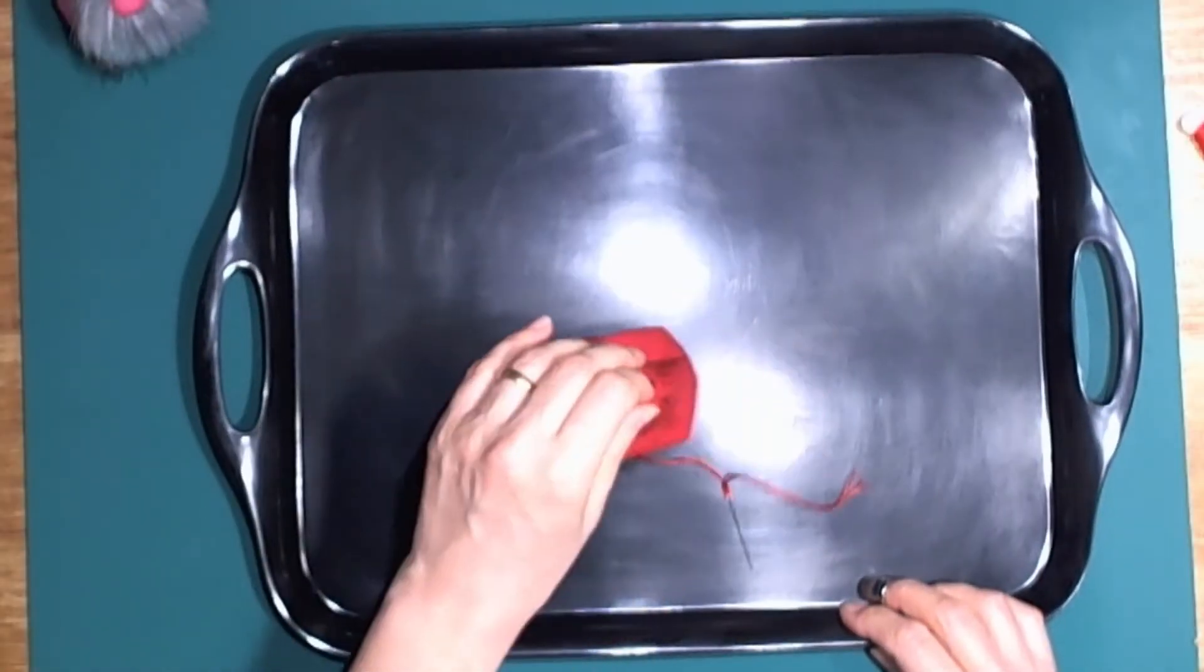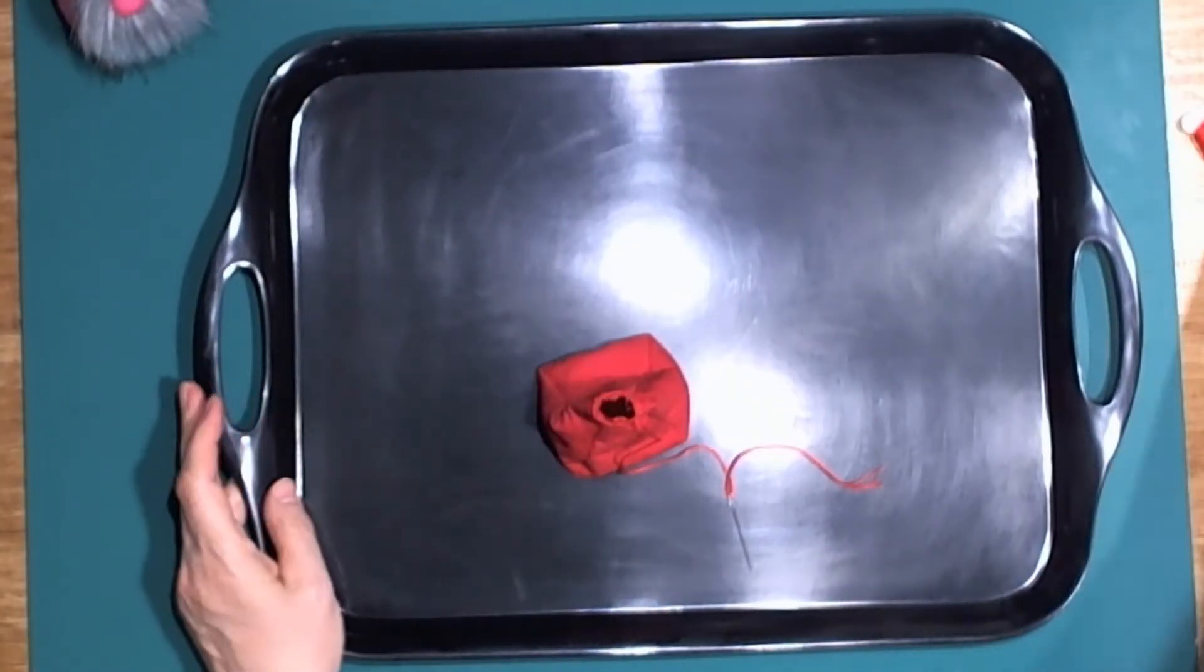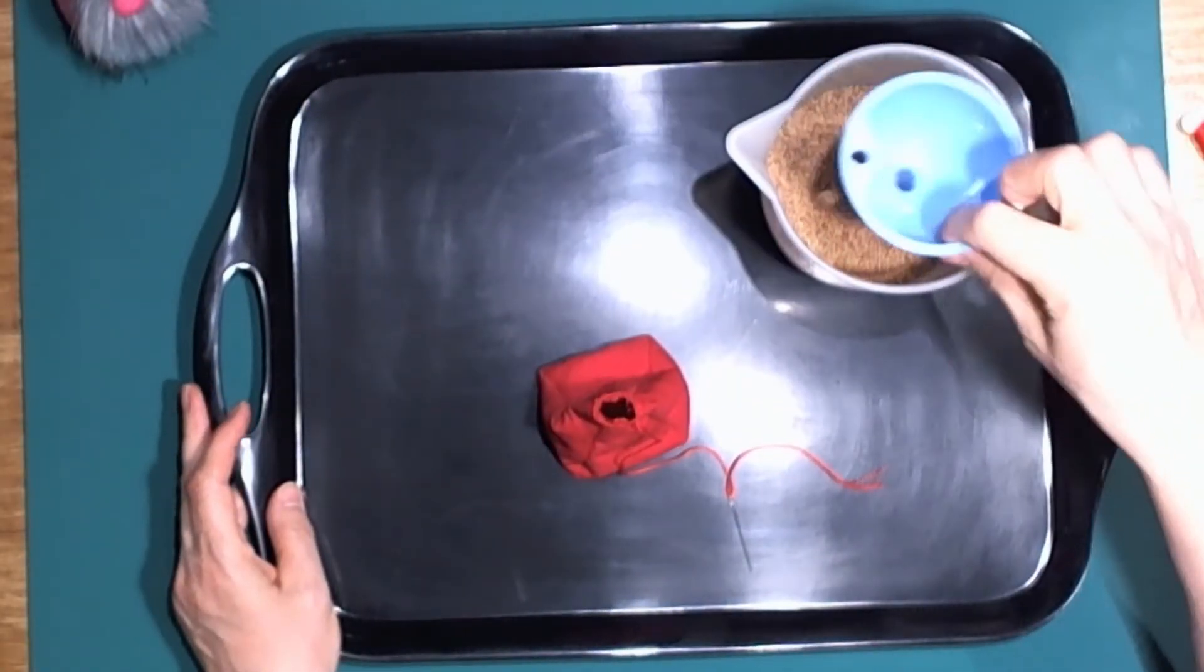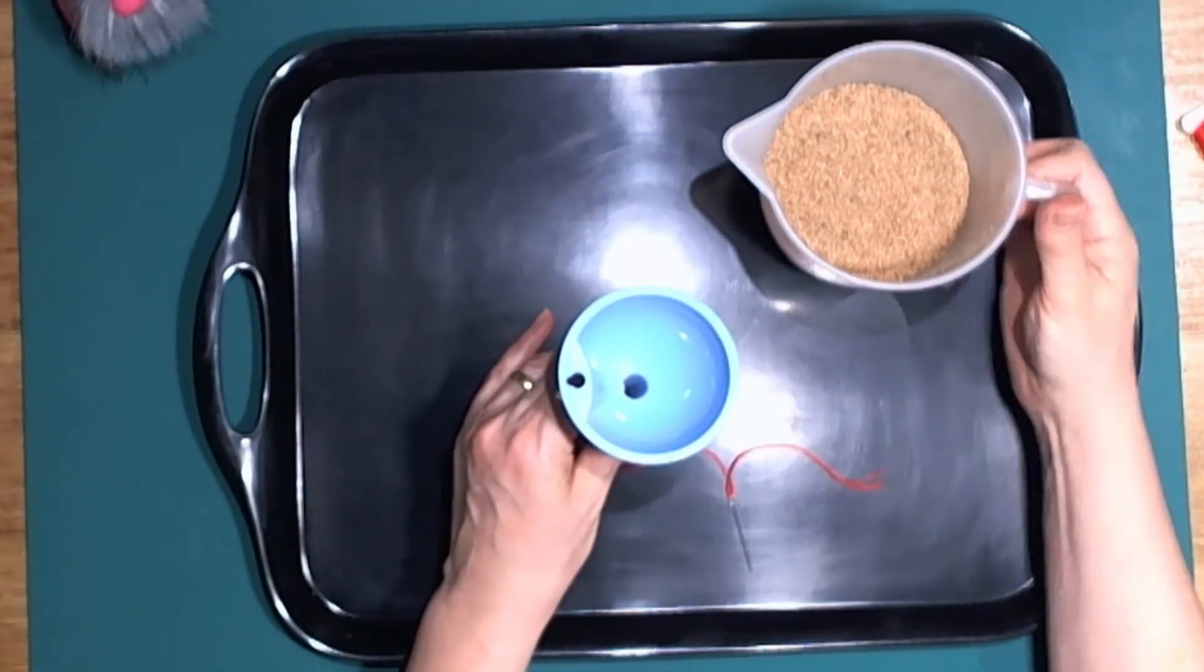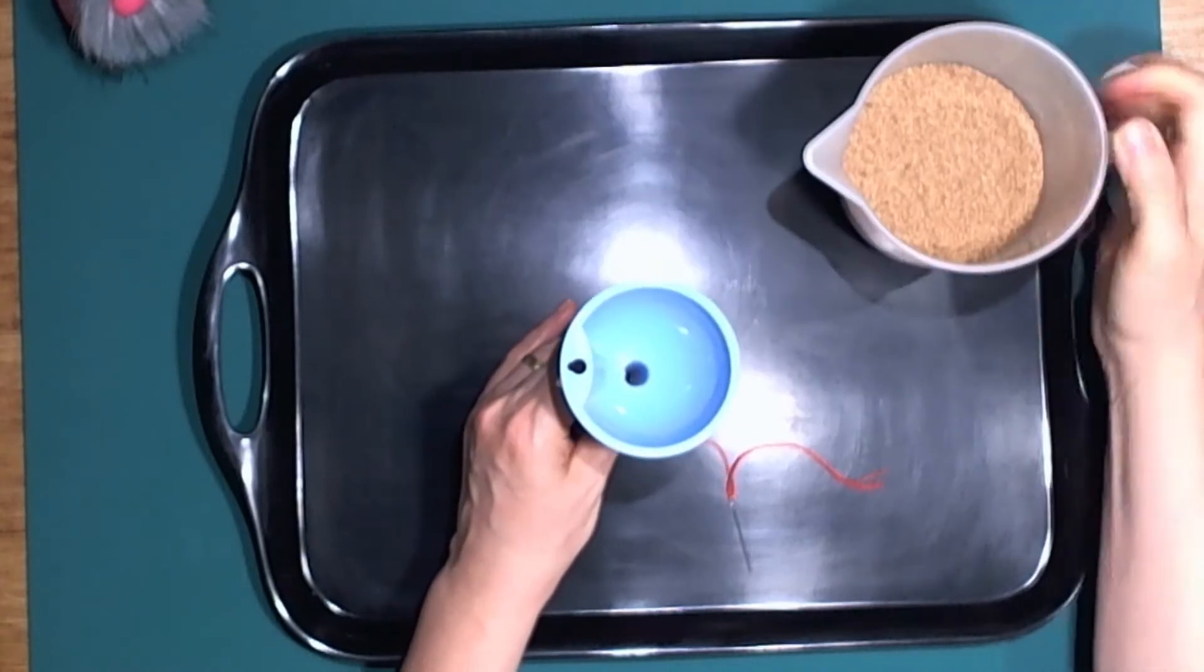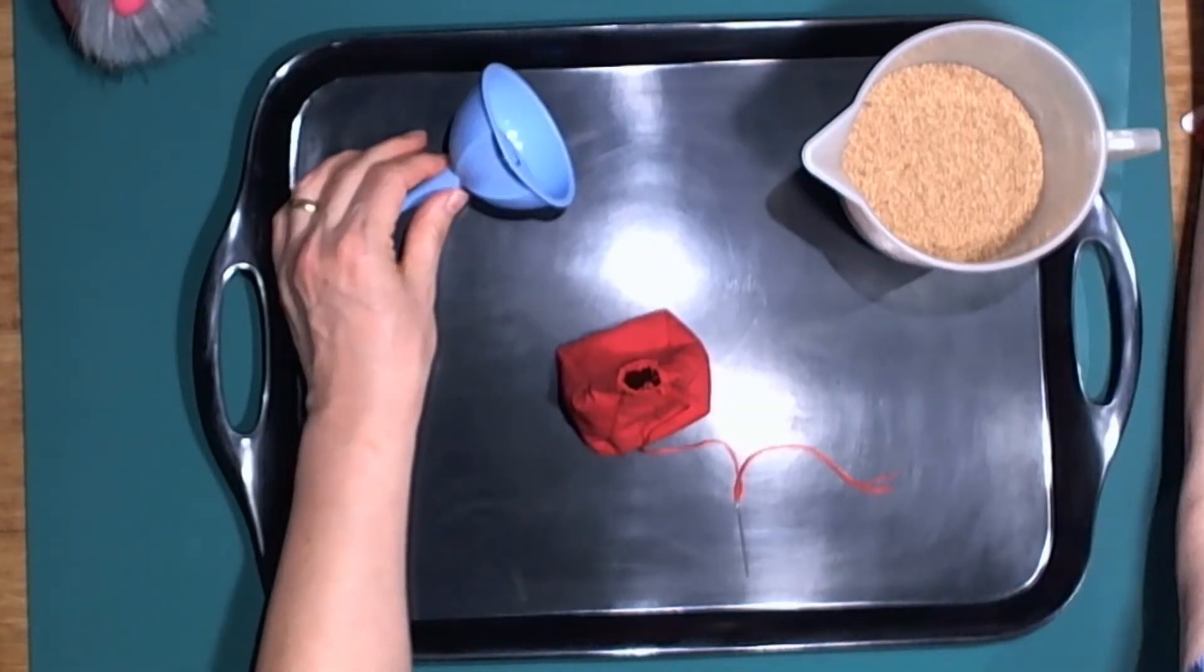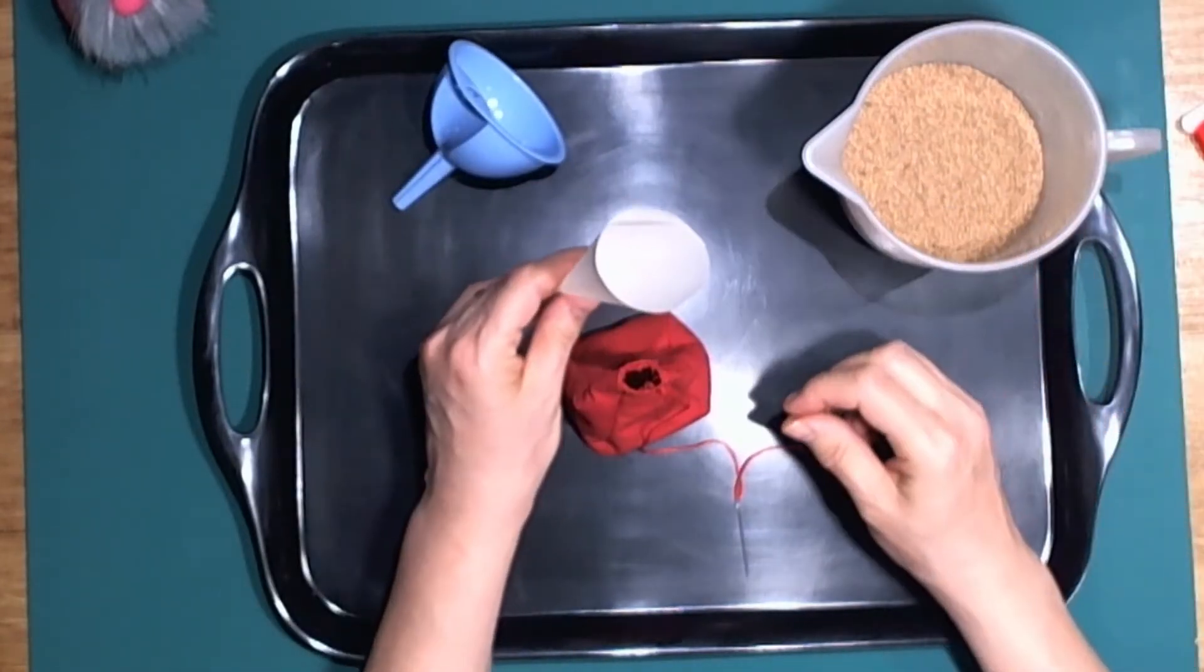I find it helpful to have a tray on which to carry out the next task. If you're using ground walnut shells, fill a small jug with around 150 grams of them, which should be sufficient to fill the gnome body.